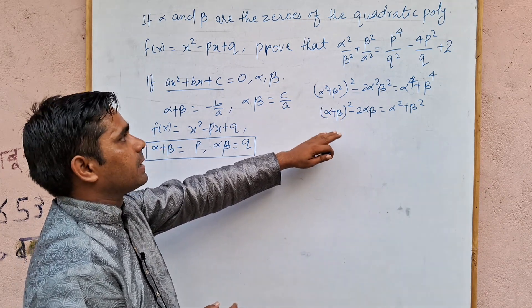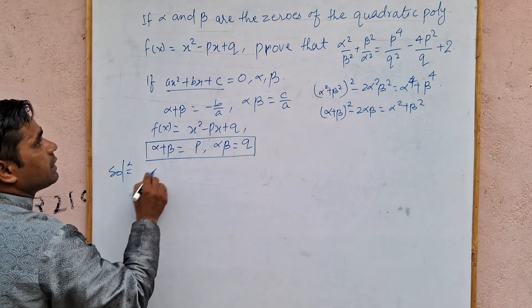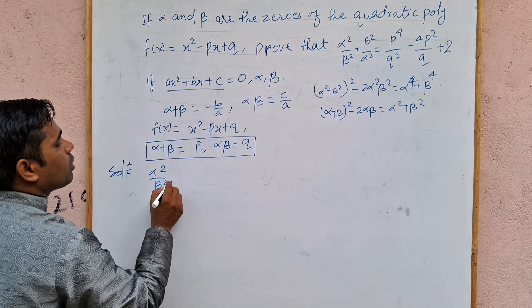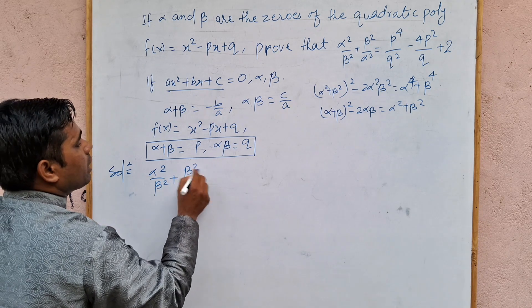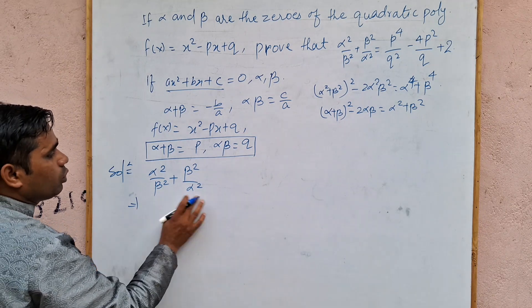If you have a problem, you can comment. What do we solve? Alpha square upon beta square plus beta square upon alpha square is equal to what do we solve? We solve both.